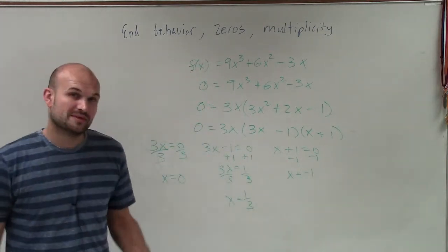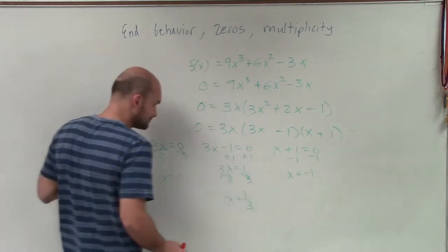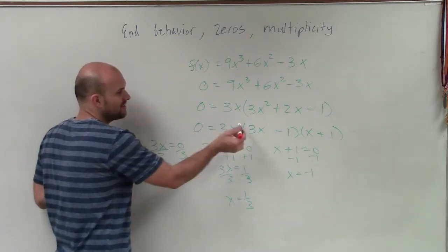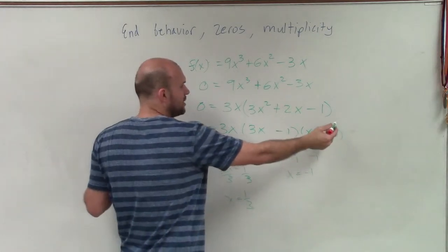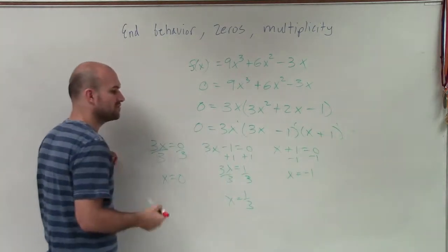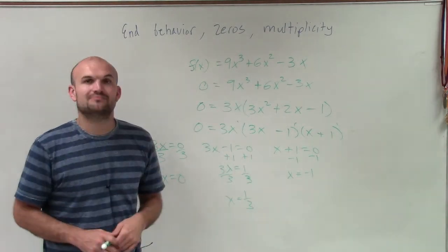So now the next step is we need to determine the multiplicity. Well, we go back up to our factors, and we see that each one of these factors only have an exponent of 1. So therefore, the multiplicity of each one of my zeros is going to be 1 or odd for this problem.